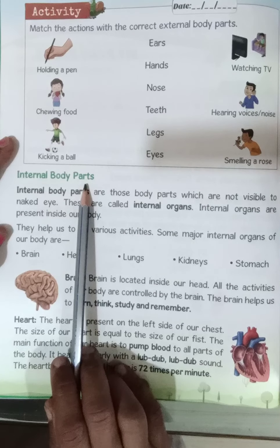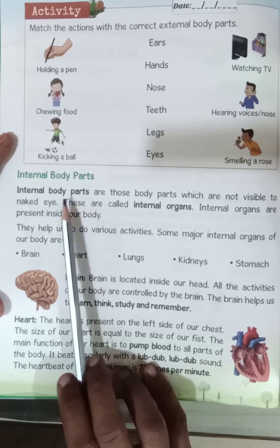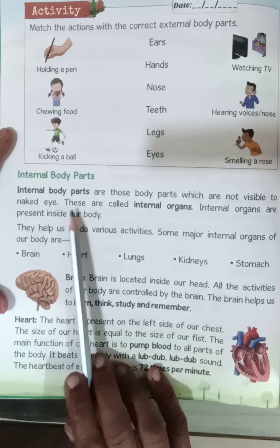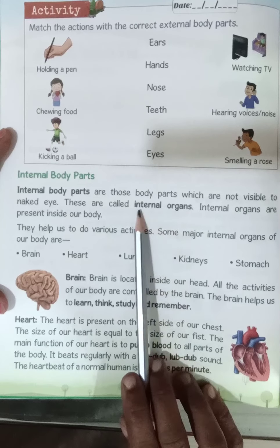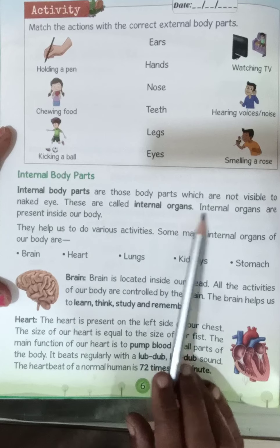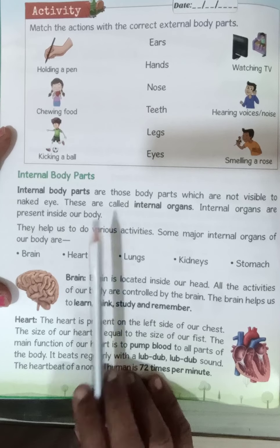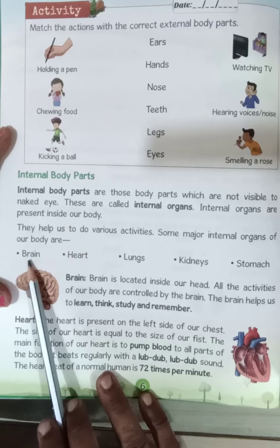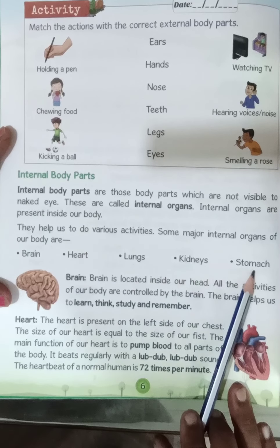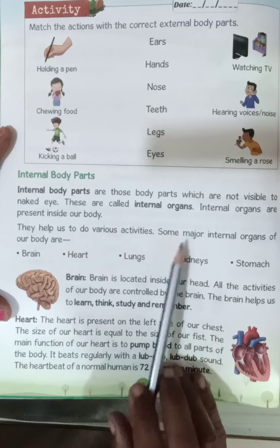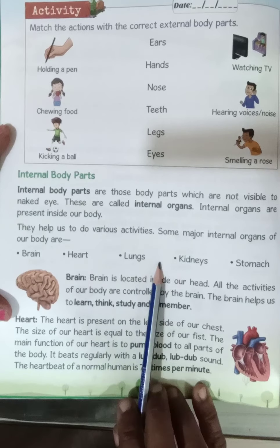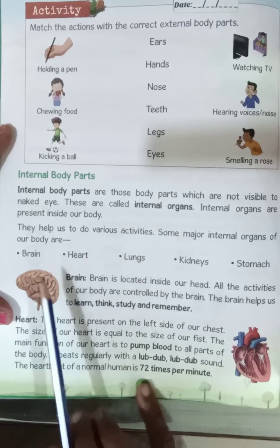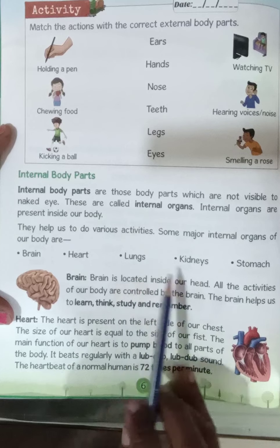Now let's come to the internal body parts. What are internal body parts? Those body parts which are not visible to the naked eyes are called internal organs. Internal organs are present inside our body and they help us to do various activities. Some major internal organs of our body are brain, heart, lung, kidney, and stomach. We can't see all these organs through our naked eyes because they are present inside our body.